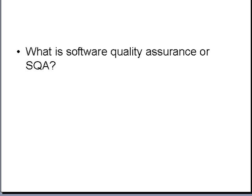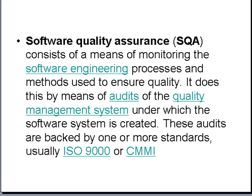So what is Software Quality Assurance or SQA? SQA consists of a means of monitoring the software engineering processes and methods used to ensure quality. It does this by means of audits of the Quality Management System under which the software system is created. These audits are backed by one or more standards, usually ISO 9000 or CMMI.